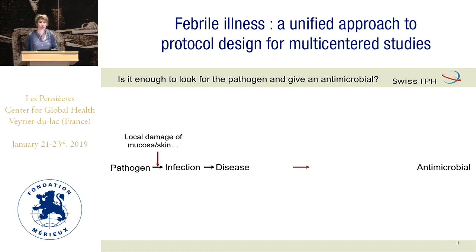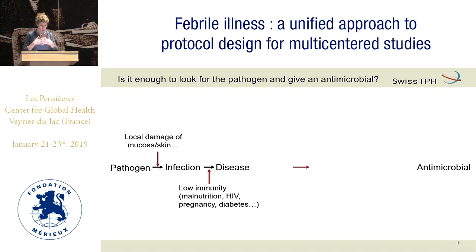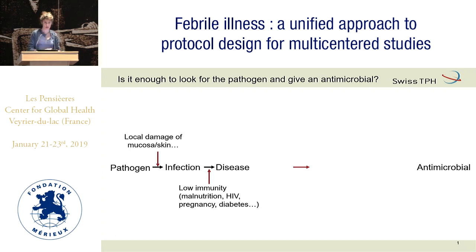Infection still does not mean disease. You are infected with many things without knowing it, and suddenly because of low immunity or comorbidities, you develop a disease. The host is absolutely essential. The main reasons we see for low immunity are malnutrition in children, HIV mainly in adults, diabetes, and pregnancy. These factors are extremely important when managing a febrile patient.